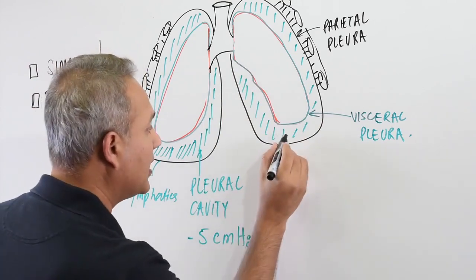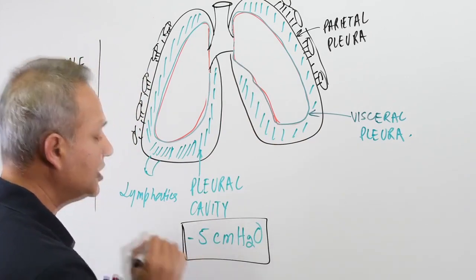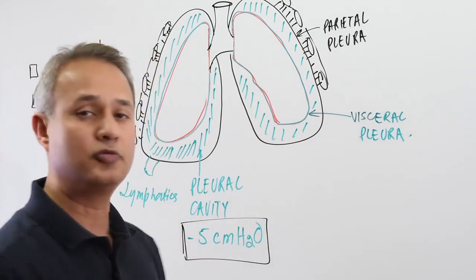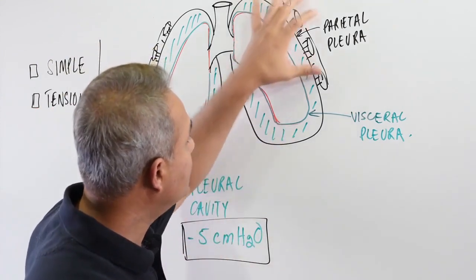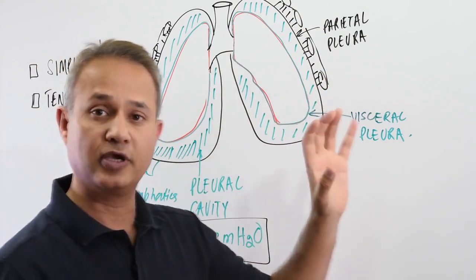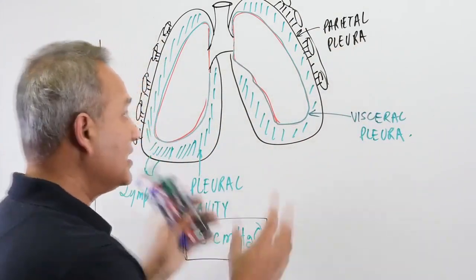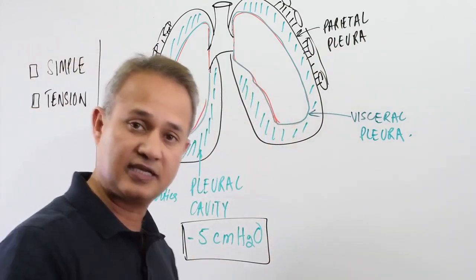Now imagine this for a second before we talk about pneumothorax. Imagine this for a second: if this suction effect is taken away, if this outward pull is taken away, then the lungs have a tendency to collapse. Right, we did that in our previous lectures.